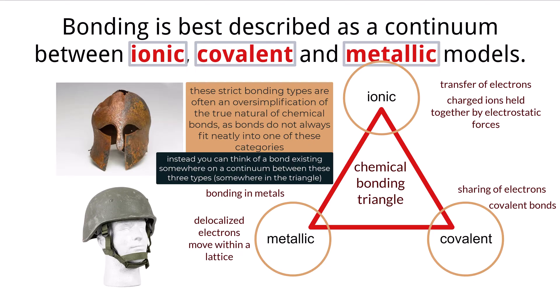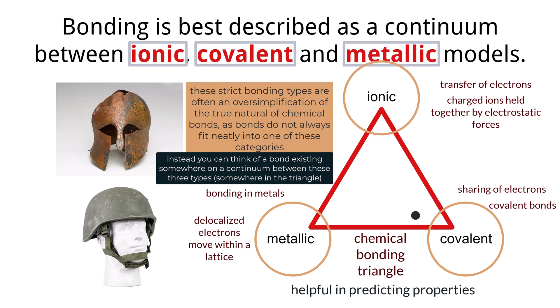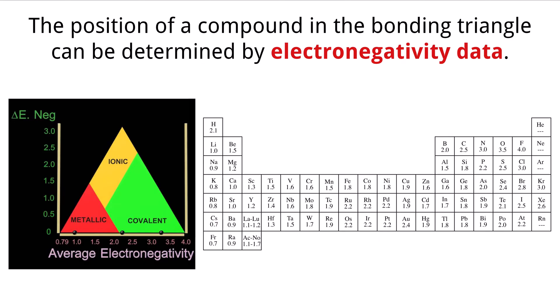A great way to represent bonds is a bonding triangle. The bonding triangle model helps us categorize different bonds visually as well as help us predict properties that those bonds may possess. While there may be some exceptions, the bonding triangle can provide predictable insight to properties and behaviors.